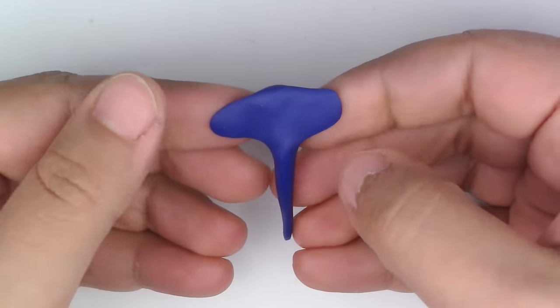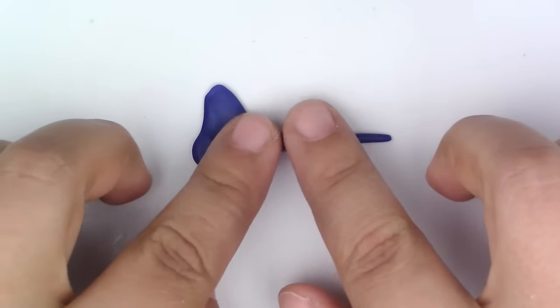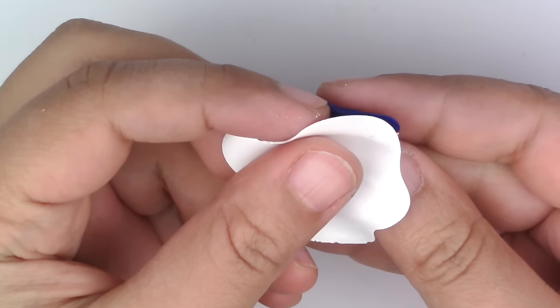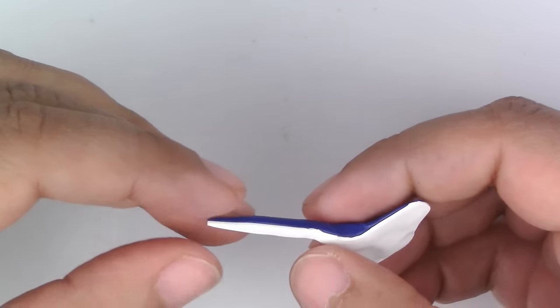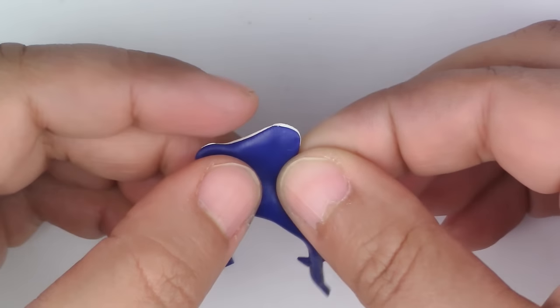There are lots of different kinds of stingrays, so have fun and make your favorite. Lightly flatten the whole thing and now flatten a piece of white clay really thin and place it under the stingray and cut around it to make the bottom part. Add some details by putting a pelvic and dorsal fin.